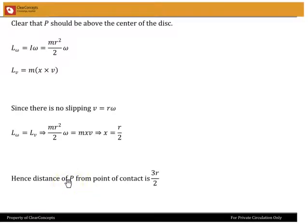So now it's clear that therefore P should be above the center of the disk. Angular momentum due to omega is simply I omega. I is m r squared by 2 here.